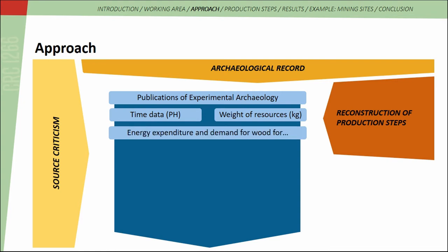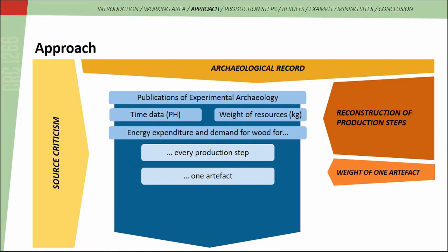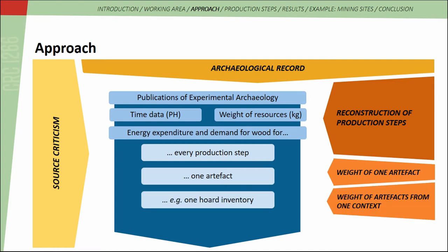In this manner it is possible to calculate the energy expenditure and demand for wood for each production step. I implemented the ore-wood ratio of the different production steps into a Microsoft Excel sheet to speed up the calculation process and to enable testing by means of examples. I used the weight of artifacts as an indicator for the required amount of raw material, making it possible to calculate the energy expenditure and demand for wood for any copper or bronze object whose weight is documented — including artifacts from one specific context such as a hoard inventory, or using copper output estimations from specific mining sites.